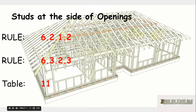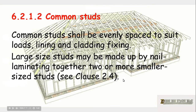The rules we need are Rule 6.2.1.2 for common studs, which says that common studs shall be evenly spaced to suit loads, linings and cladding fixing, and that large size studs may be made up by nail laminating together two or more smaller sized studs.